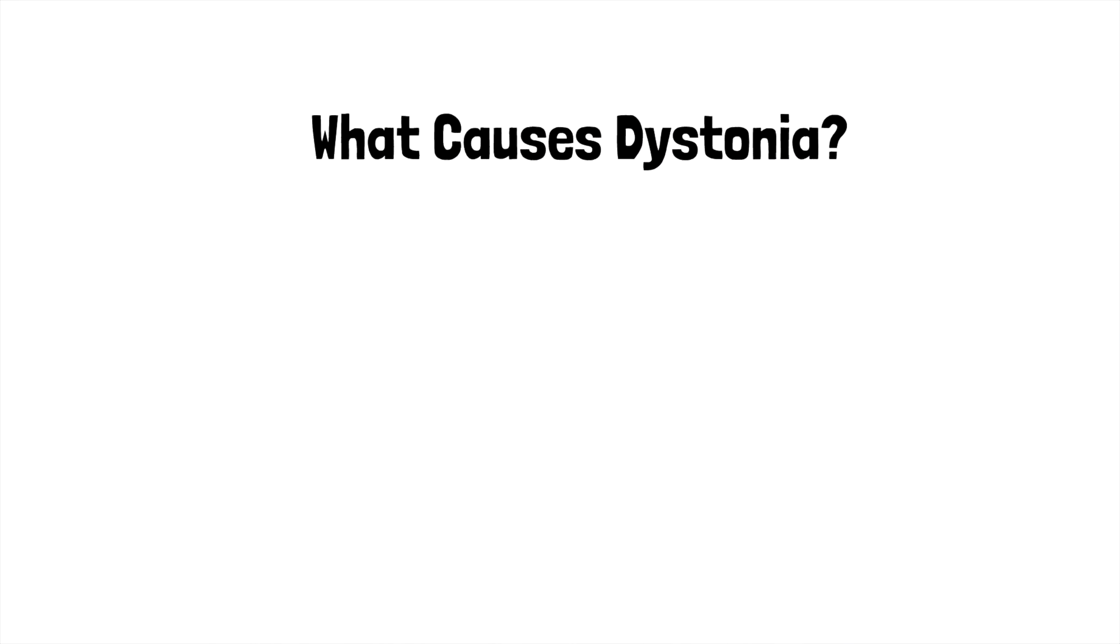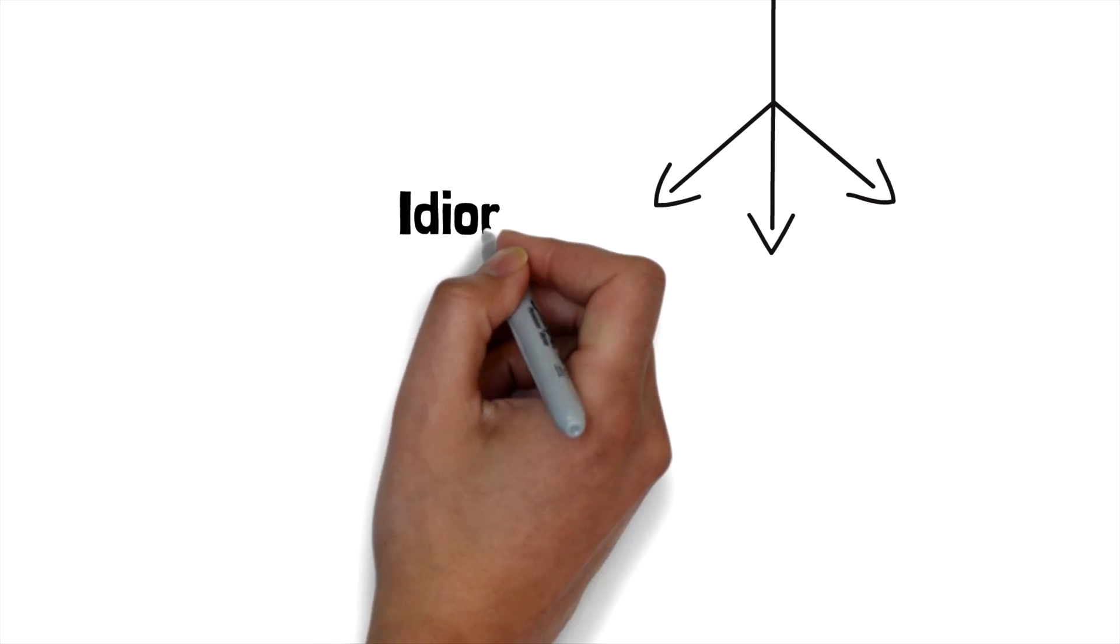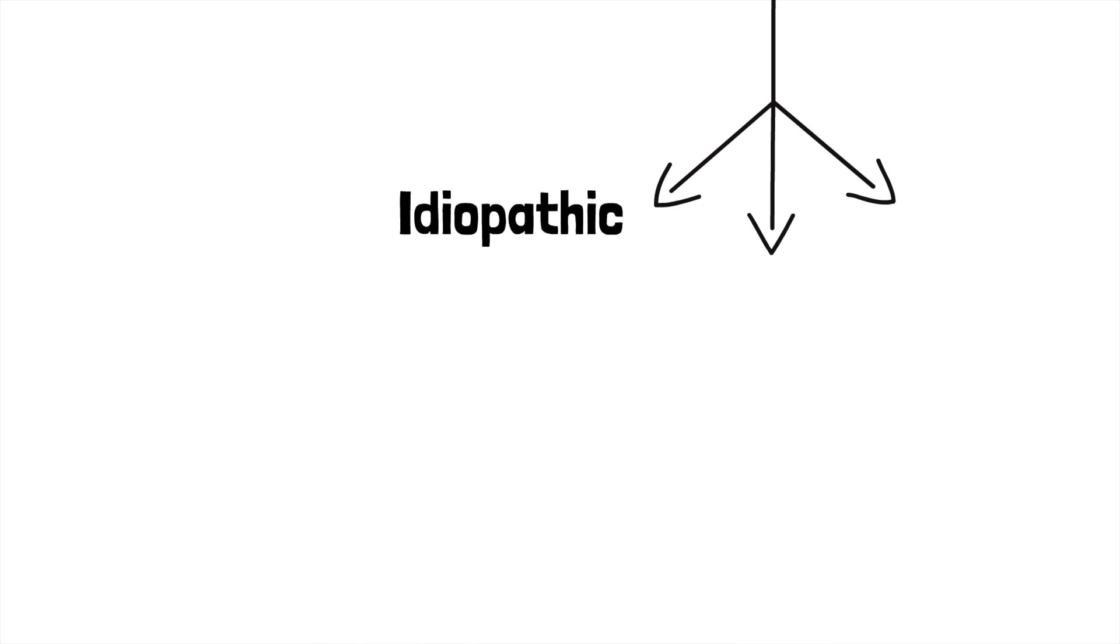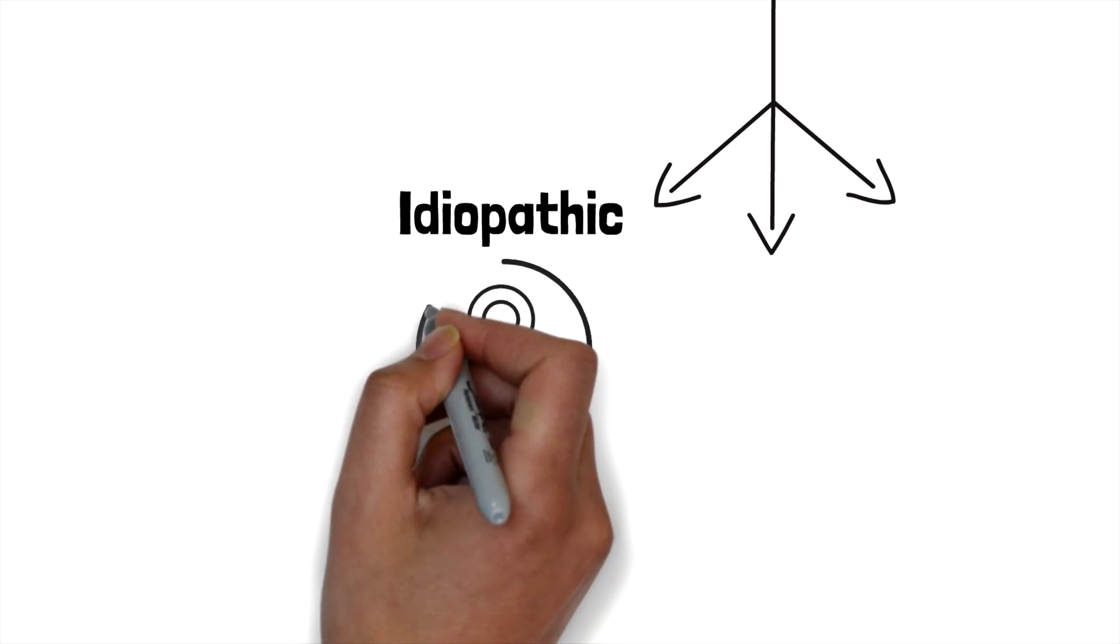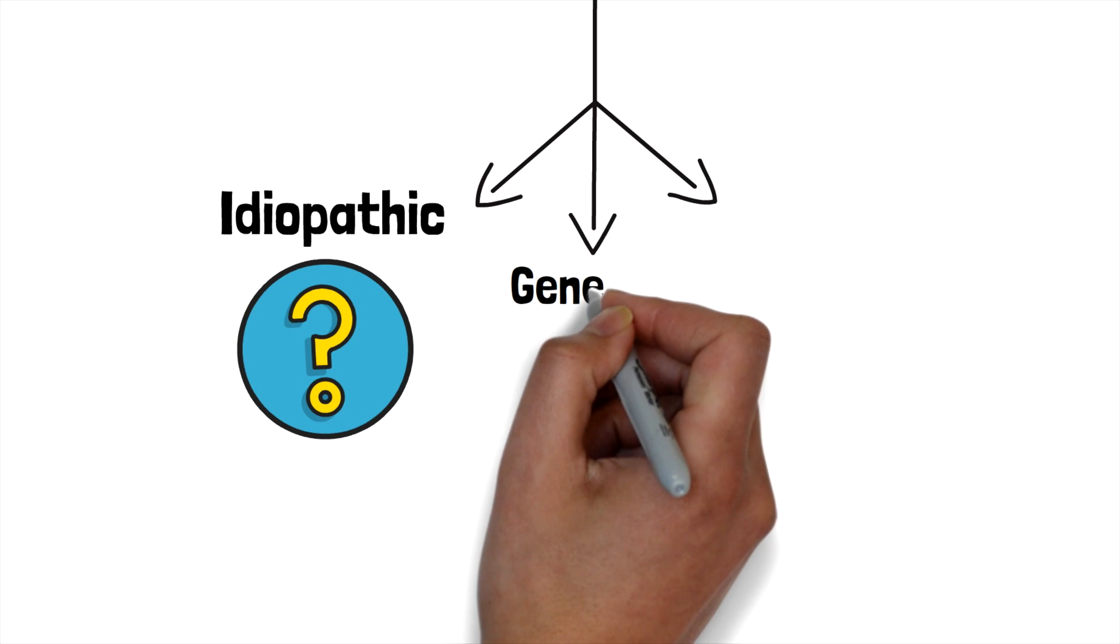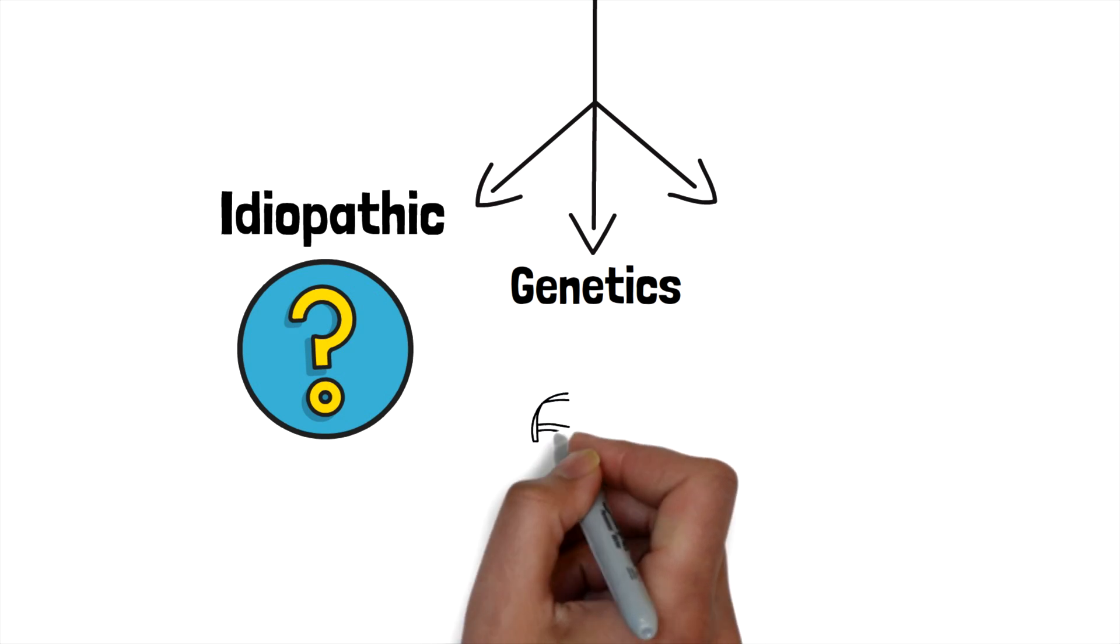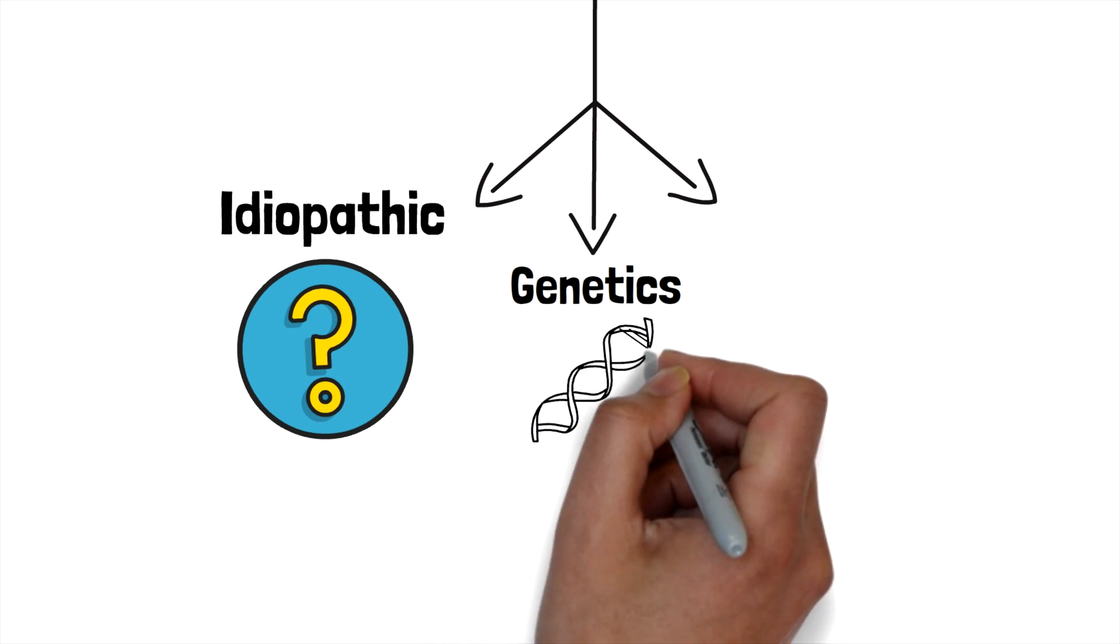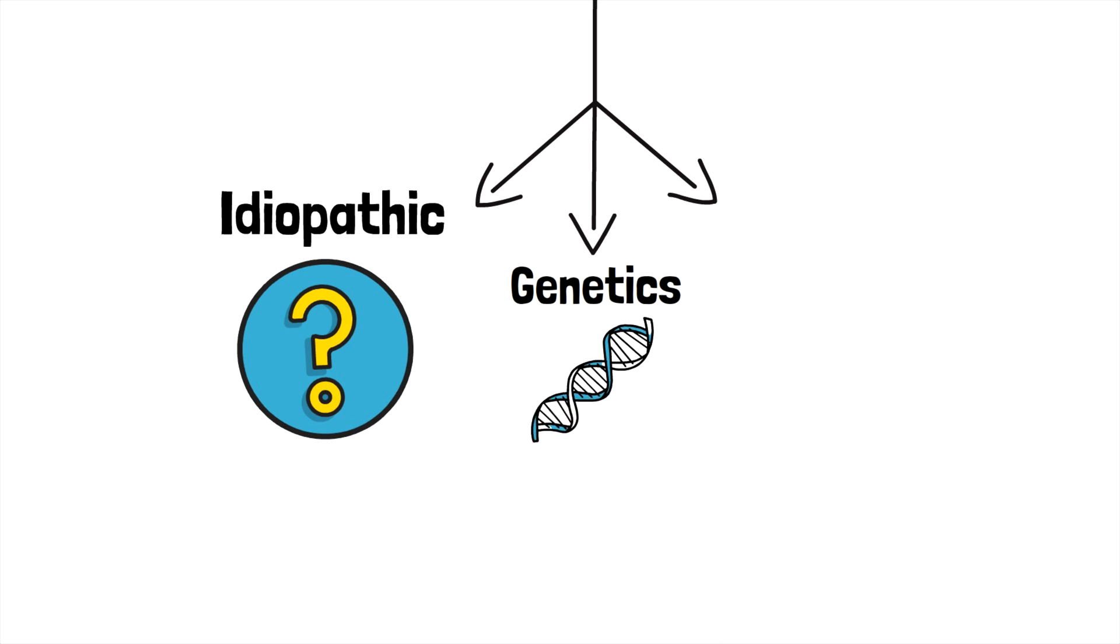So what exactly causes dystonia? Unfortunately, many dystonia cases are considered idiopathic, which means the direct cause is unknown because of the complexity of this disorder. Dystonia can be inherited genetically, and different genetic malformations can lead to different types of dystonia. The most common and widely known is DYT1 dystonia. The vast majority of these cases are caused by a specific mutation within a specific gene.